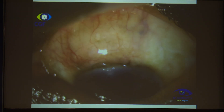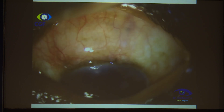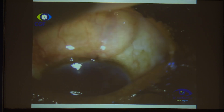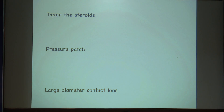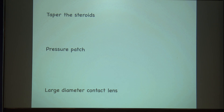For overfiltration, initially do conservative management: taper the steroids, pressure patch, and large diameter contact lens. If this doesn't work, find out the cause. If it is a thin flap, you may have to do a revision and keep a patch graft. If the suture has given away, you will have to go and re-suture the flap.